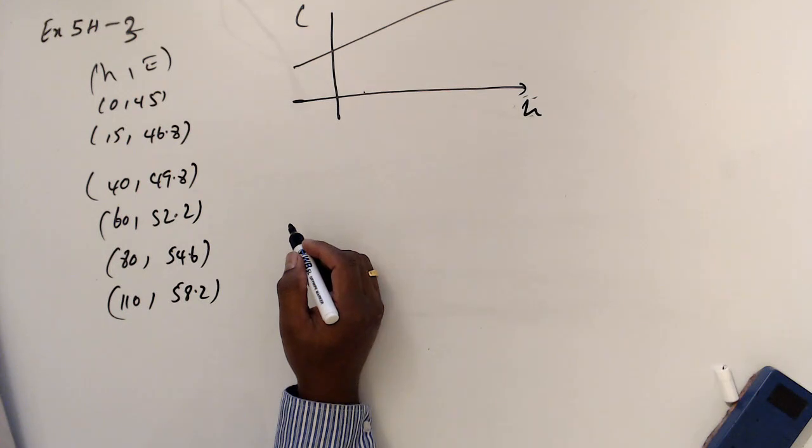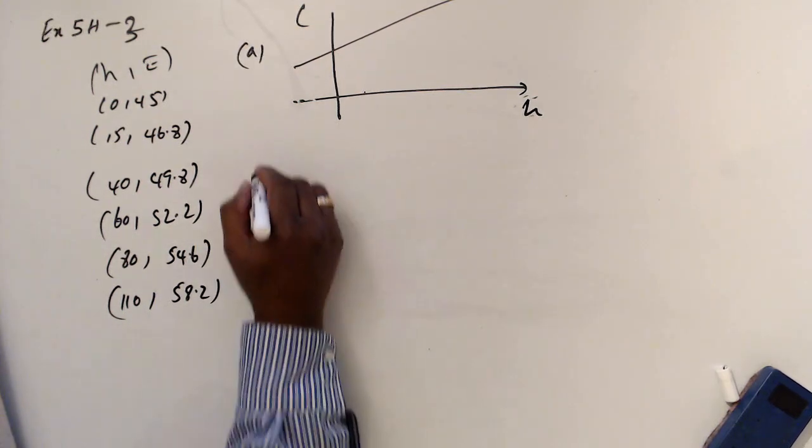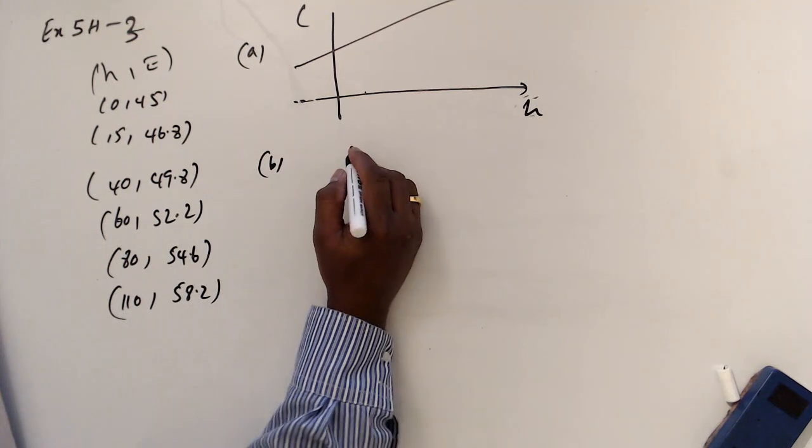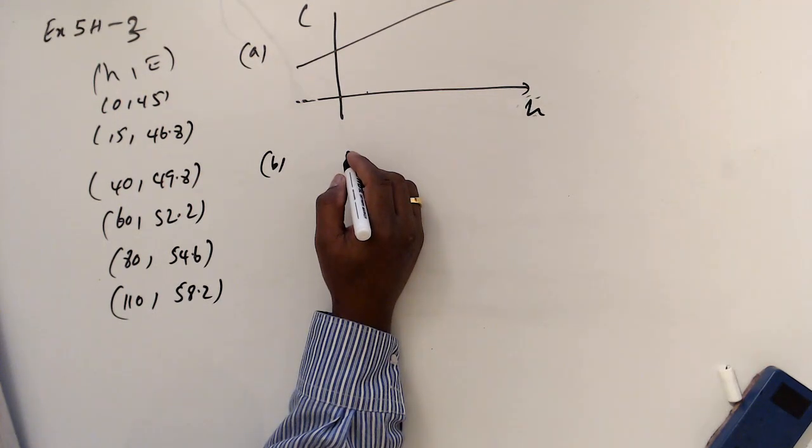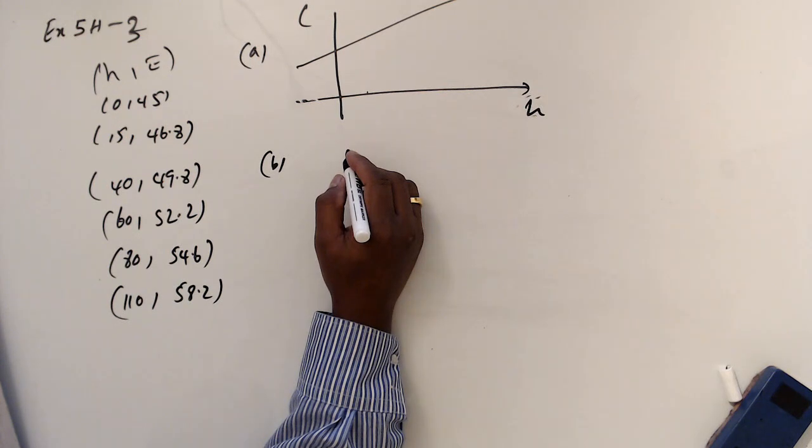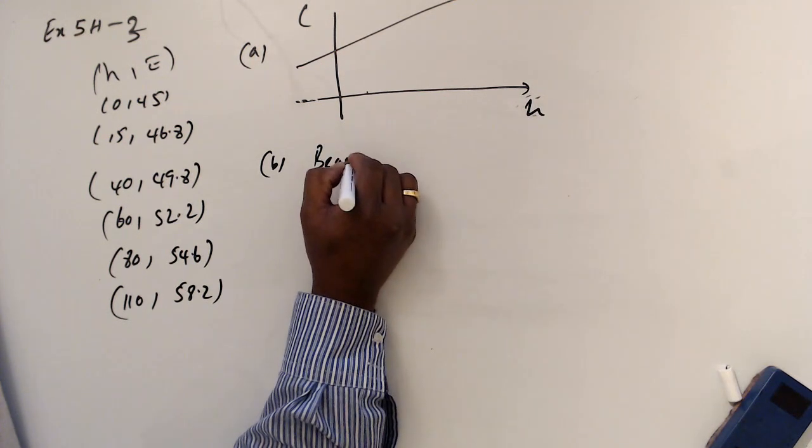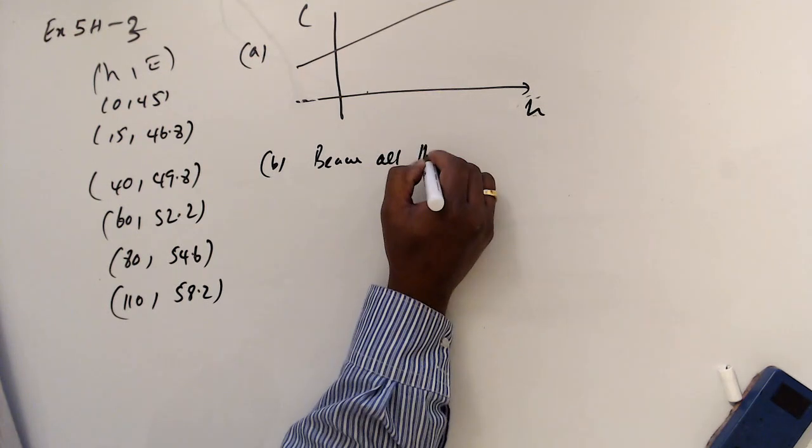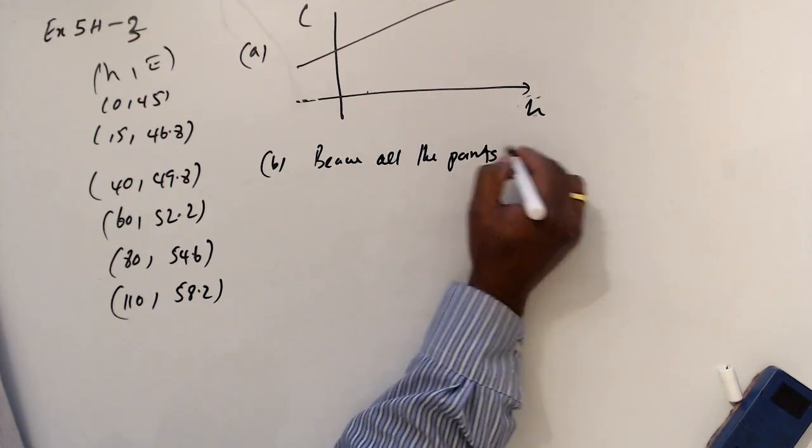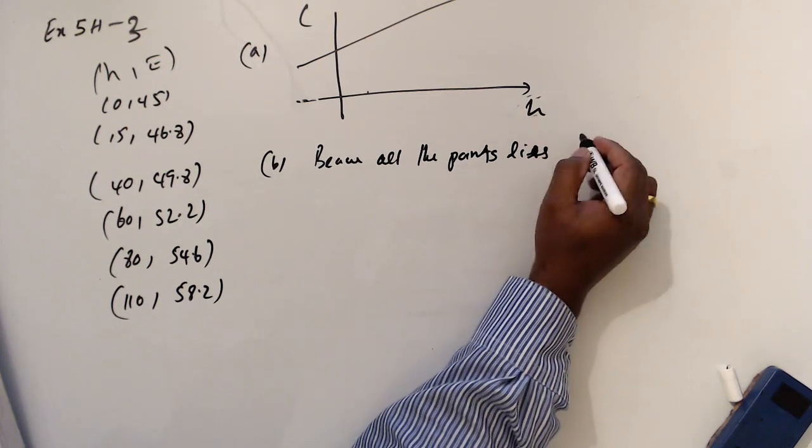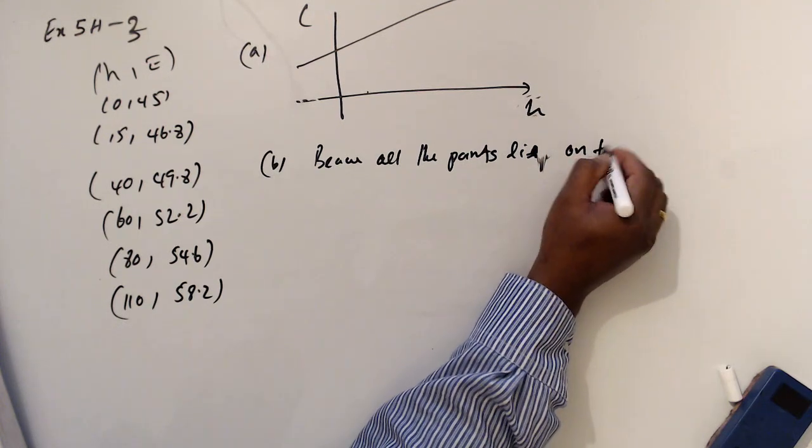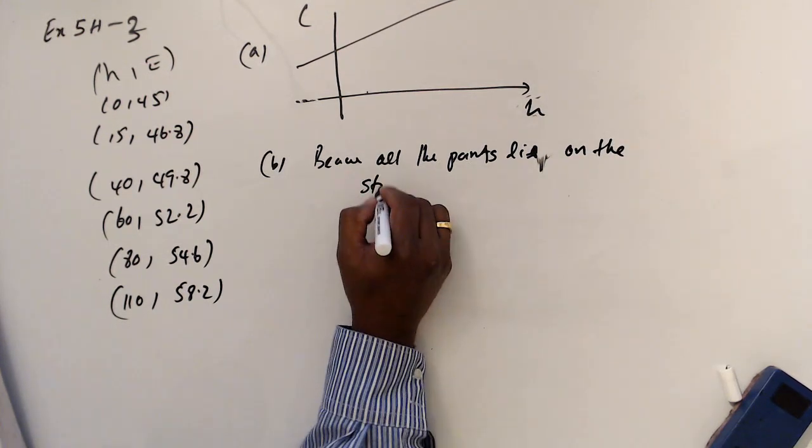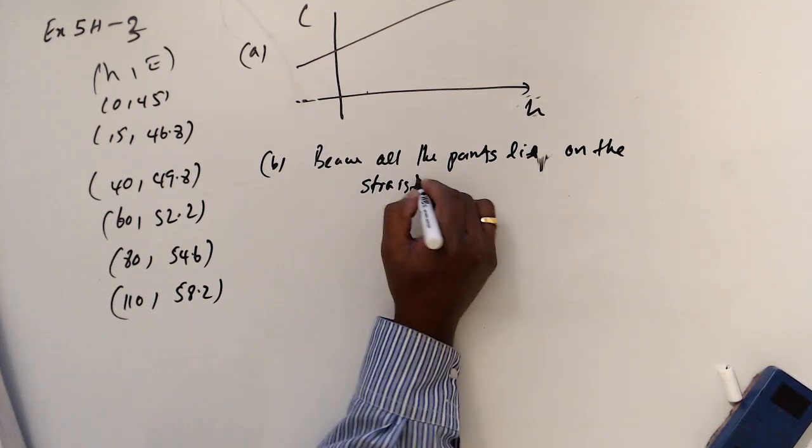When you draw in a graph, you can do part A, then part B. When you draw, you can see that they are on a straight line. Explain how you know a linear model would be an appropriate model. Because all the points lie on the straight line.